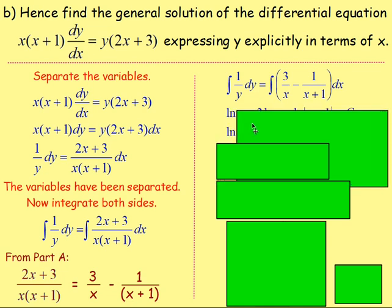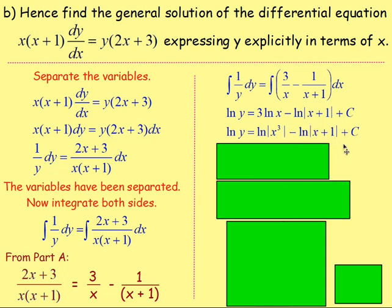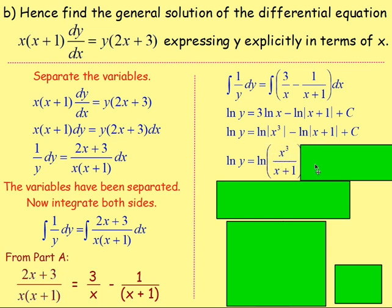If you have a number in front of ln — there's a 3 in front of ln x — move that up, giving ln(x cubed). So ln y equals ln(x cubed) minus ln(x plus 1) plus c. Applying your log rules, ln(x cubed) minus ln(x plus 1) becomes ln(x cubed over (x plus 1)). Now take the exponential of both sides: e to the power of ln y equals e to the power of ln(x cubed over (x plus 1)) plus c, which splits up as e to the power of ln(x cubed/(x plus 1)) times e to the power of c.